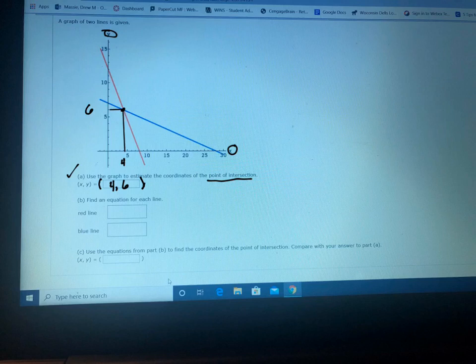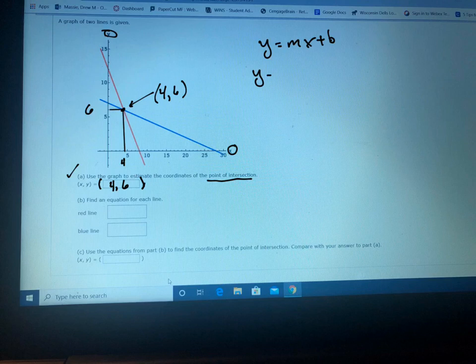Now it says find the equation of each line. Here's your point 4 comma 6, and we're going to use that point to write the equation of the line. One of the equations of a line is Y equals MX plus B, and that's probably the one that people remember the most. It's good, but it's probably not the most useful equation, at least not in this example.